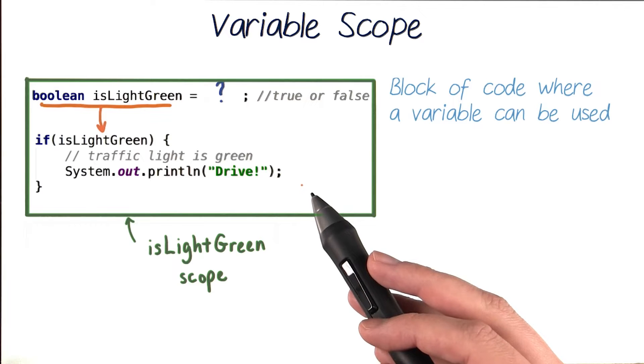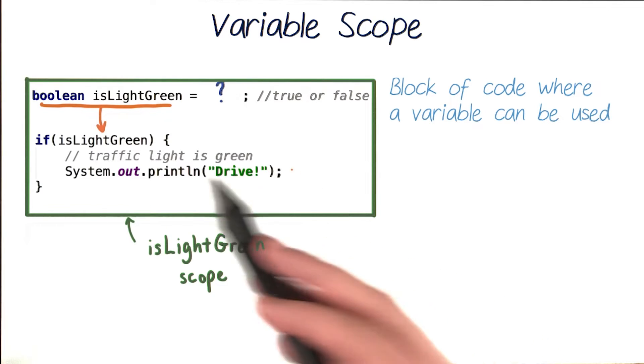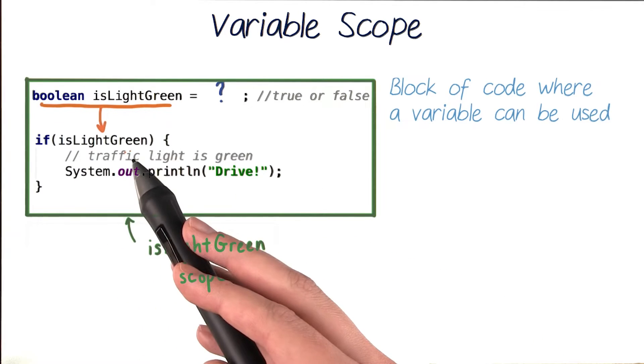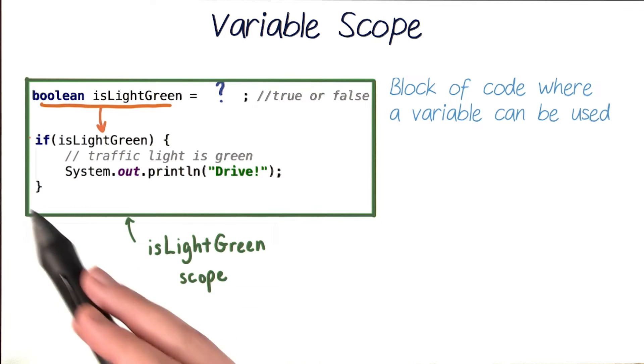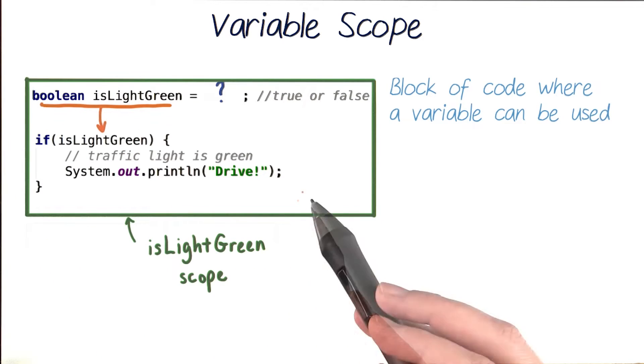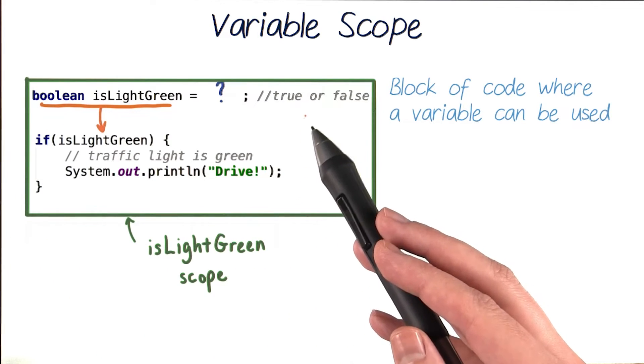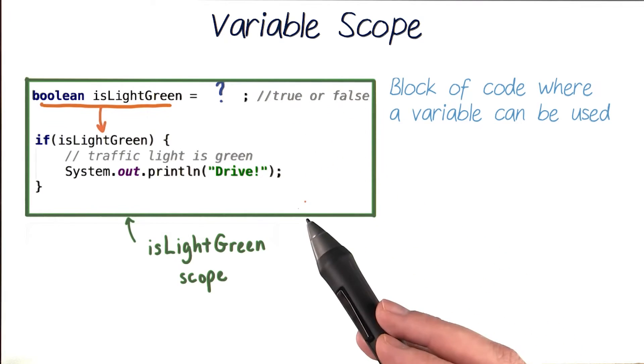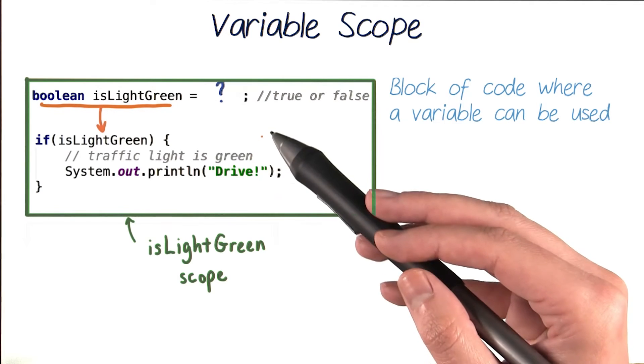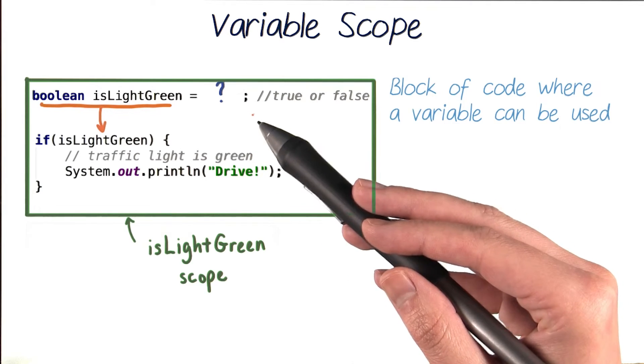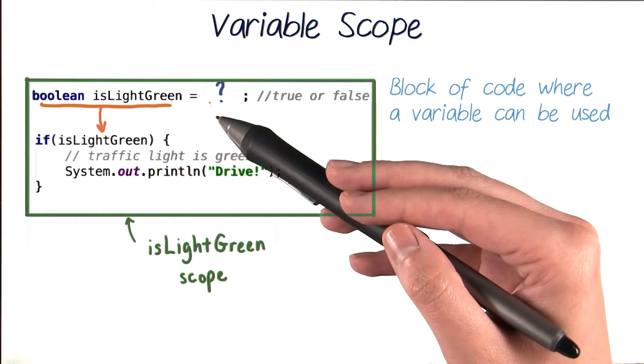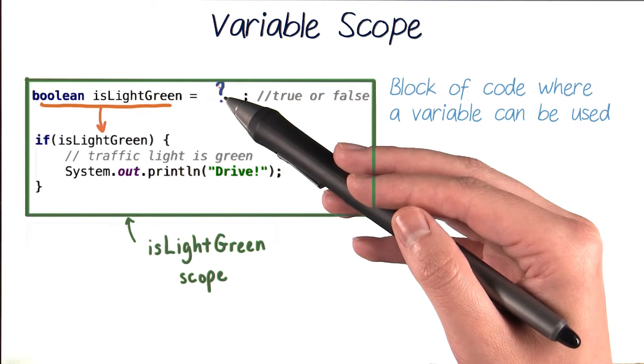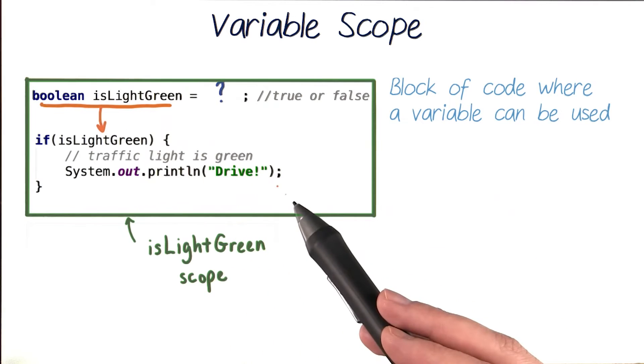In this case, we needed to use our variable isLightGreen in our if test condition, so the scope of isLightGreen has to contain this whole if statement. By declaring isLightGreen outside of any curly braces or conditions, we make it available to our whole program. So our whole program is its scope. Remember that we also have to declare variables before we can use them in our code, which is why our test condition variable is always declared before we use it in our decision-making code.